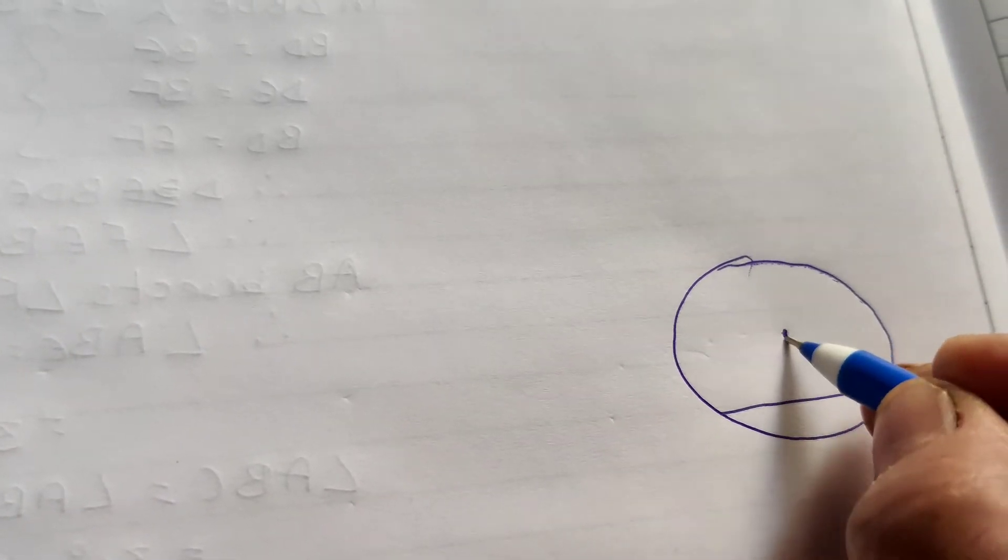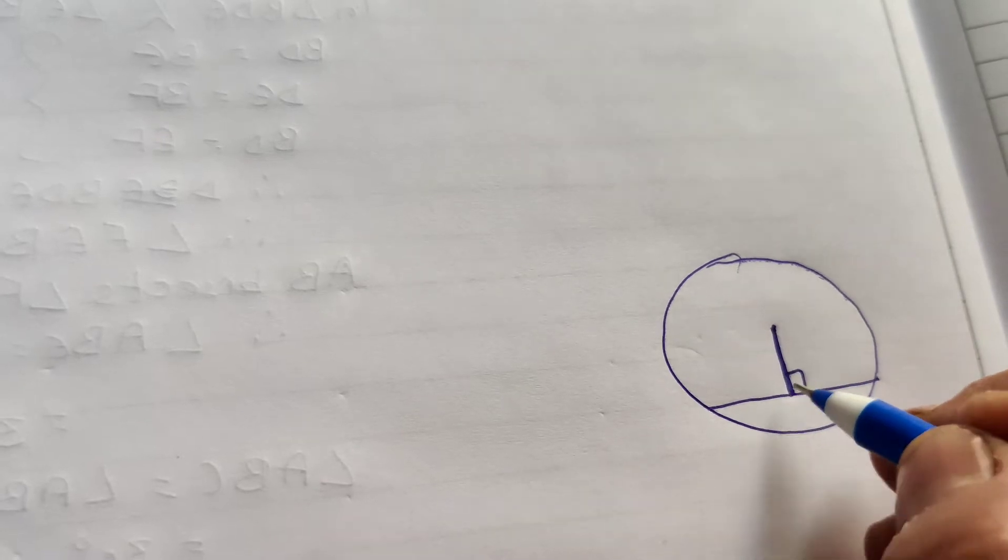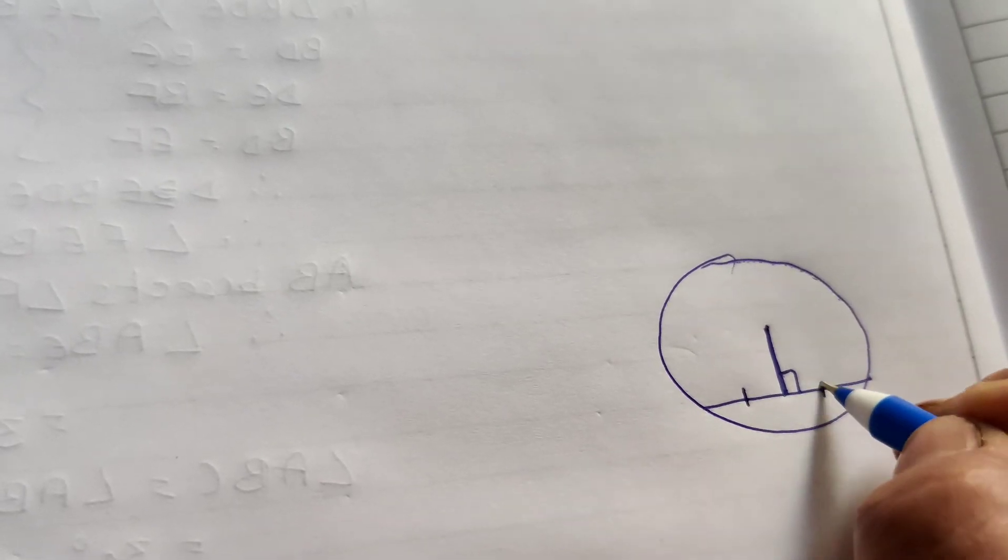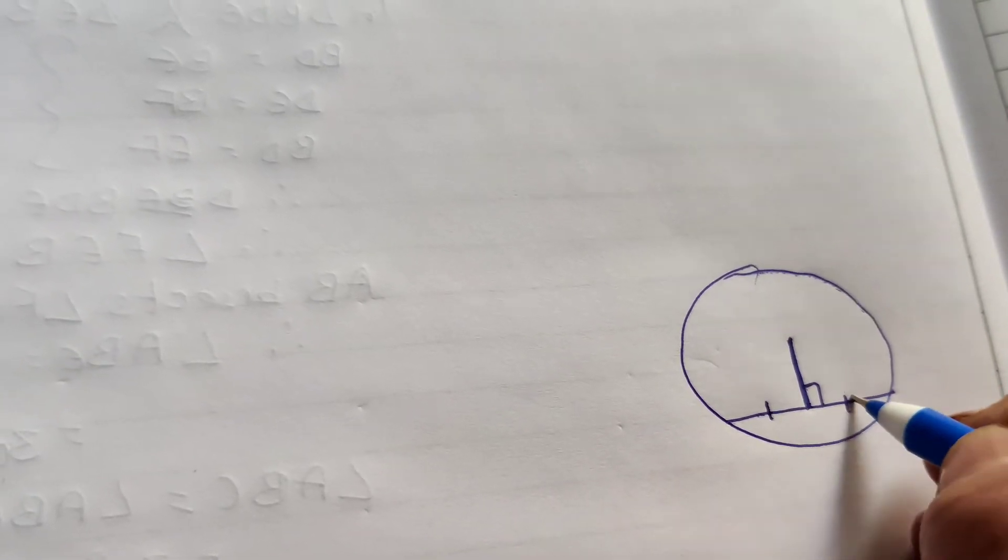It means this is a circle. A chord liya hai. Chord ke ooper perpendicular line hai ye. Hemko bata na hai ki ye joh line hai bisect the chord. It means divide kerti hai two equal parts mein.